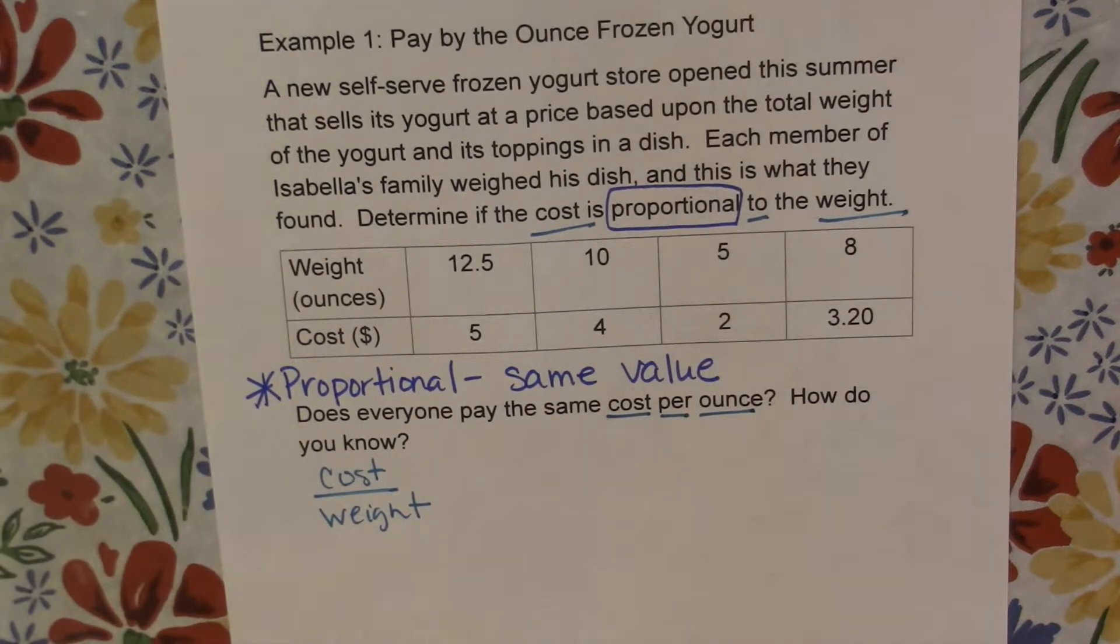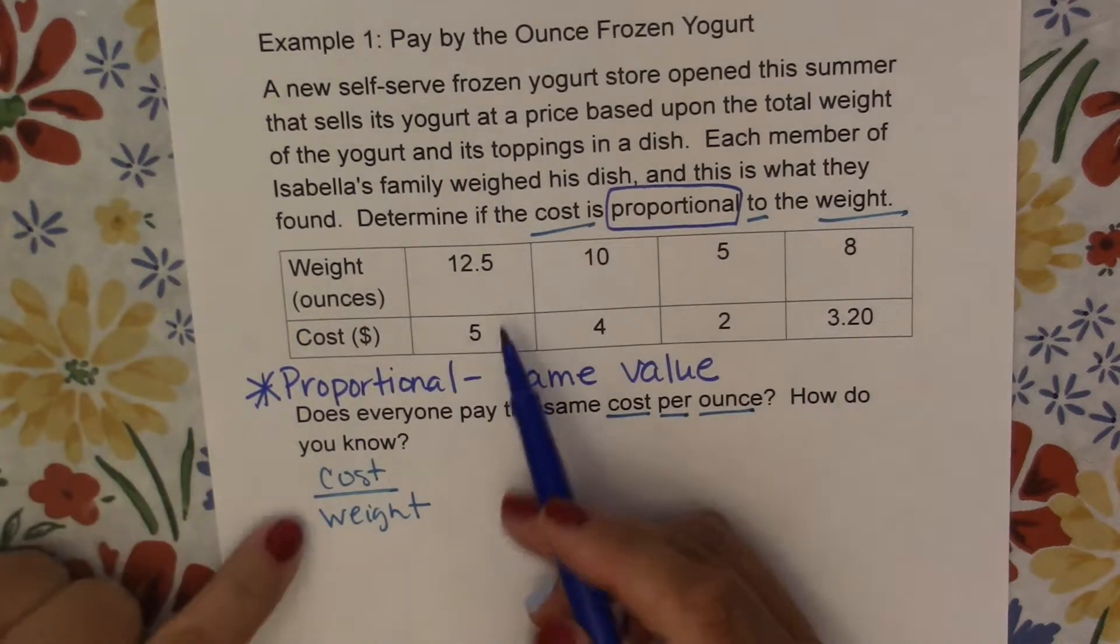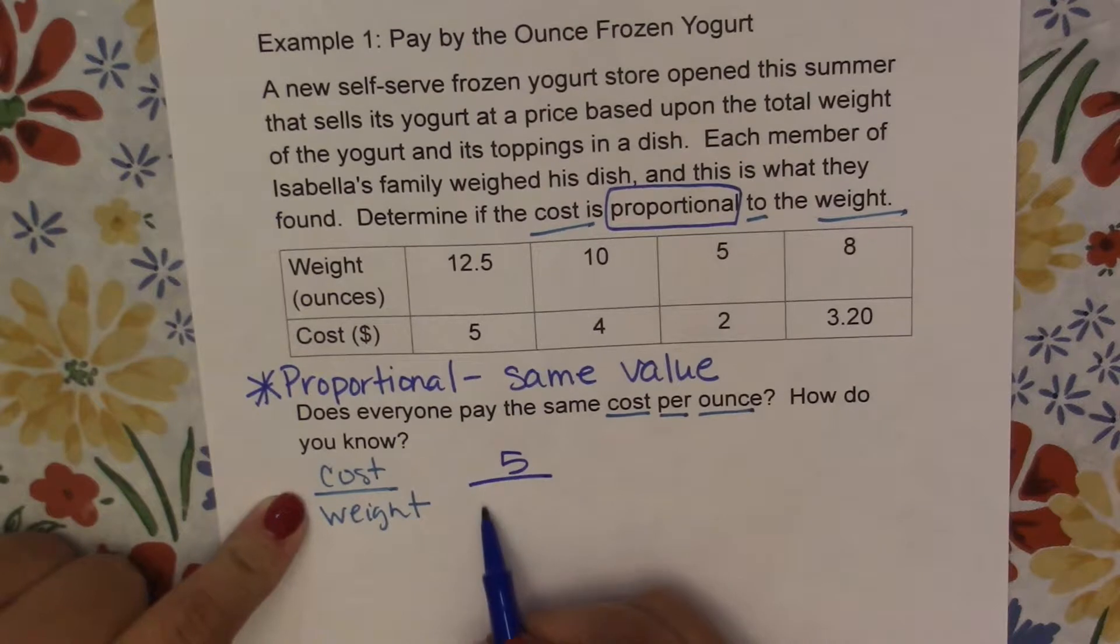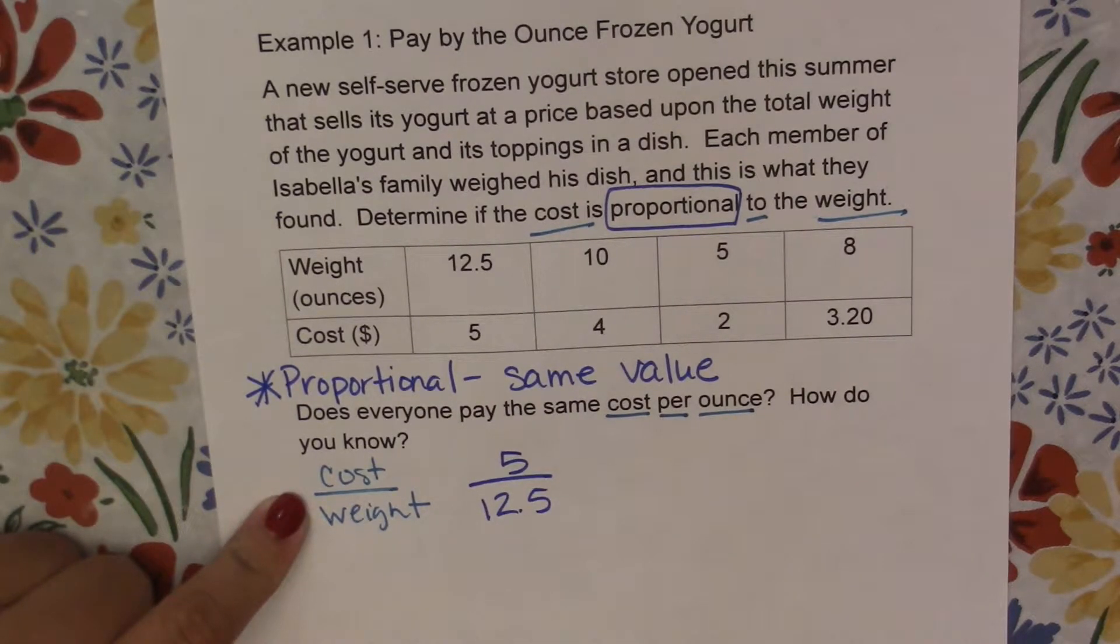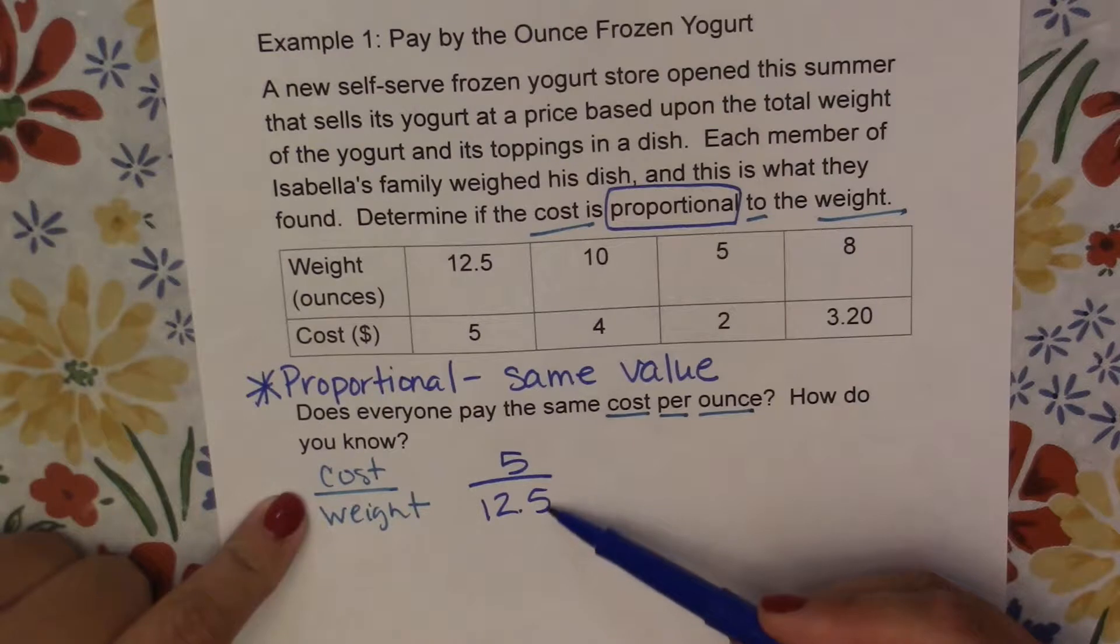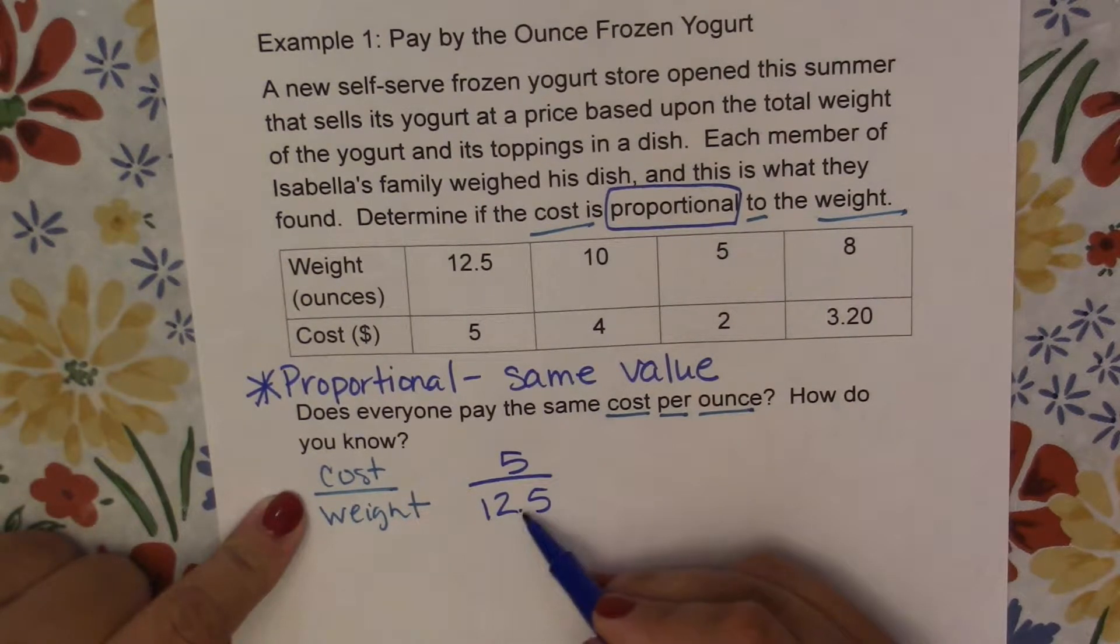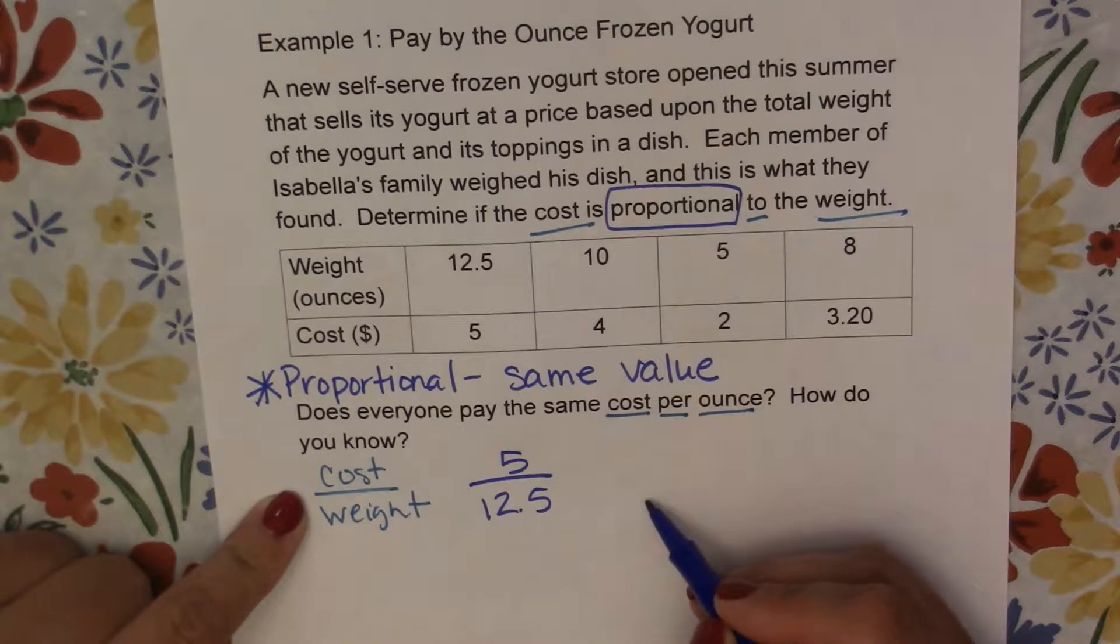Alright, so let's start with our first person here. Their cost was $5 and they got 12.5 ounces. Now we're going to treat this like a fraction or a division problem, so we're going to simplify this down to 1. In order to do that, we would divide by 12.5. So if we're looking to make this bottom a 1, we would do 12.5 divided by 12.5, and what we do to one side we have to do to the other.